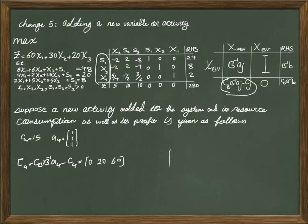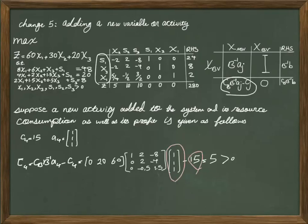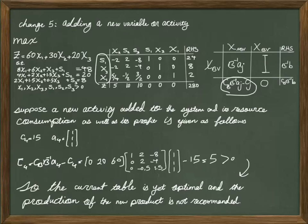The coefficient for X4, the fourth decision variable, is CBB inverse AJ minus CJ. CBB does not change because it's the coefficient of basic variables in the objective function, and B inverse does not change because we still have the same basic variables. For AJ and CJ, we substitute the values related to X4: the new profit is $15, and the resource consumption vector is [1, 1, 1]. The value for CBB inverse AJ minus CJ is 5, which is positive — a sign that the current table is optimal and production of the new product is not recommended. We keep X4 as a non-basic variable with a value of 0.